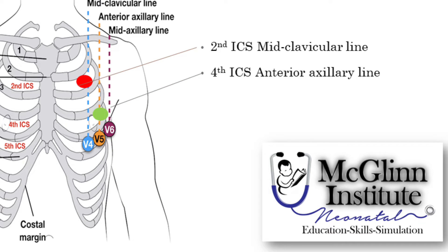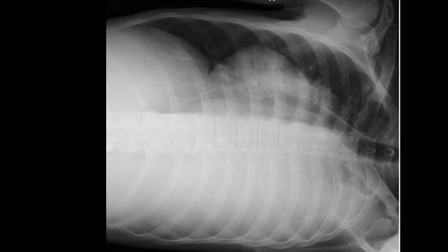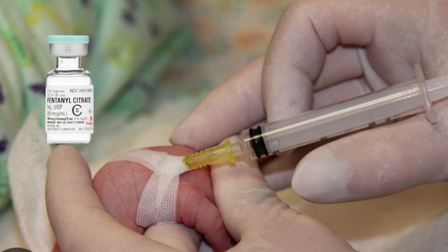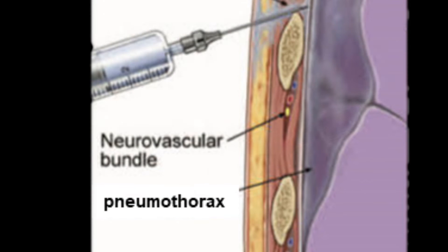Next, you'll want to choose your landmark. With affected side up, you'll choose the 4th intercostal space, anterior axillary line. Placing your patient affected side up cannot be overemphasized, as it helps the air to rise, as seen in this lateral decubitus. If non-emergent and time permits, be sure to premedicate prior to placing your pigtail catheter. As you prepare to place the needle, remember you will be sliding over the top of the rib, not underneath, in order to avoid the neurovascular bundle.